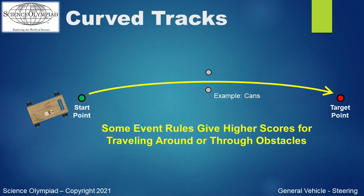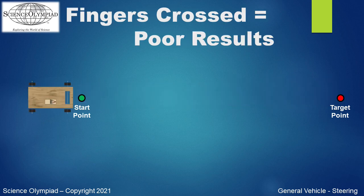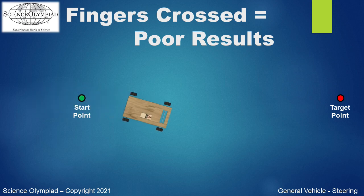Other rules place obstacles on the track where the vehicle must accurately travel between. Good control of vehicle steering will allow a team to get a better score. Fingers crossed for the vehicle to travel to the target is not a good plan for success.